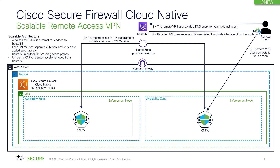The complete architecture is automated, so your architecture will provide automation for newly instantiated devices. The moment we add a new CNFW in the architecture or in your environment, we add that information in Route 53 and we add routes for the new CNFW in AWS routing automatically, using the automation that comes along with Secure Firewall Cloud Native.